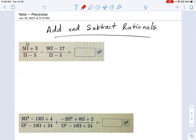So in this case, what do I have? I have one common denominator already of omega minus five. And on the top, I have five omega plus three minus nine omega. And careful here, it's minus negative 17. So when you have minus negative 17, that's plus 17.